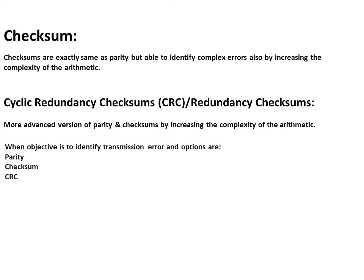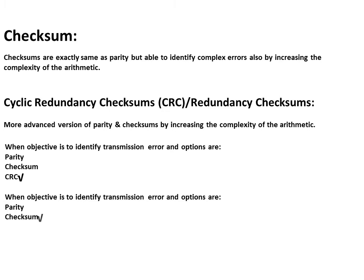When the objective is to identify transmission errors and the options include parity, checksum, and CRC, we need to give priority to CRC because it is the most advanced version. When the options are only parity and checksum, we give priority to checksum because checksums are more advanced than parity.